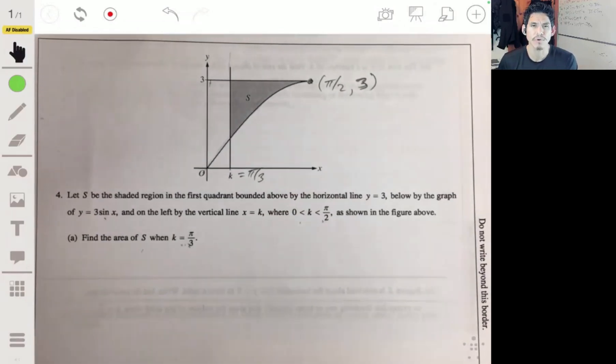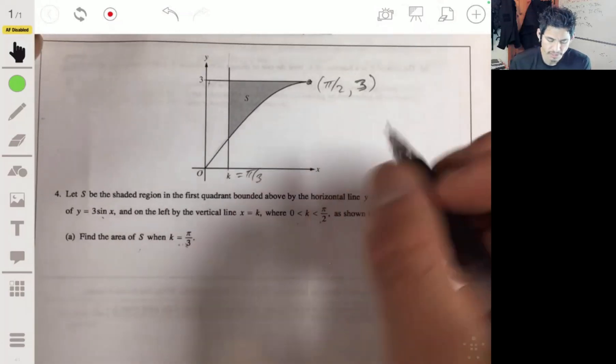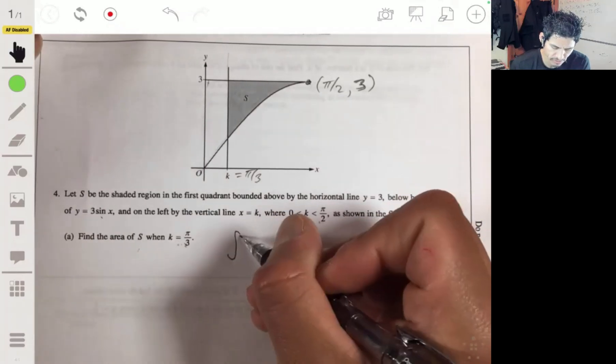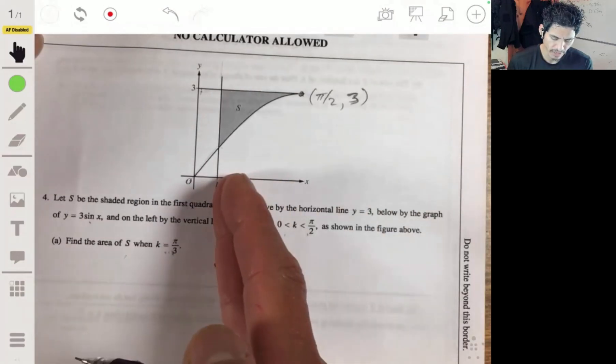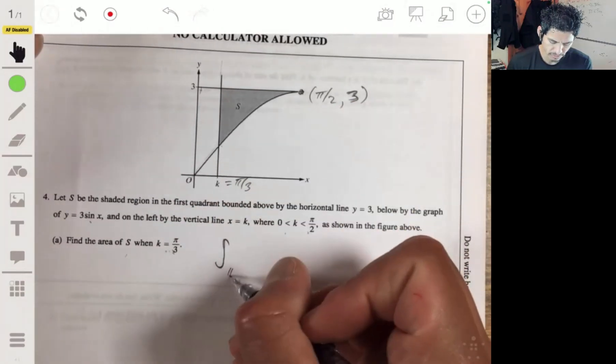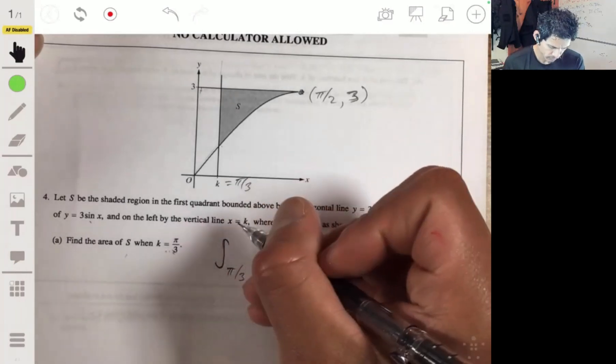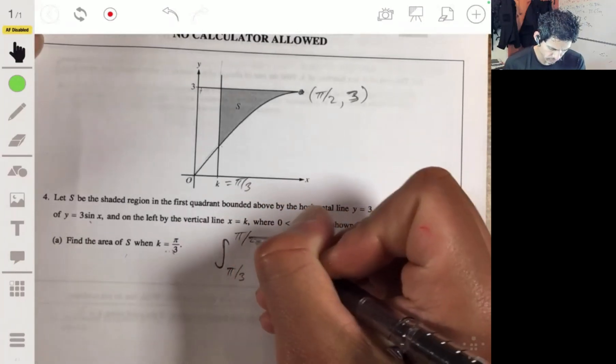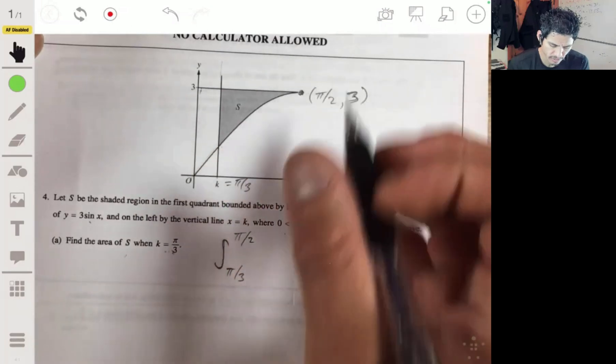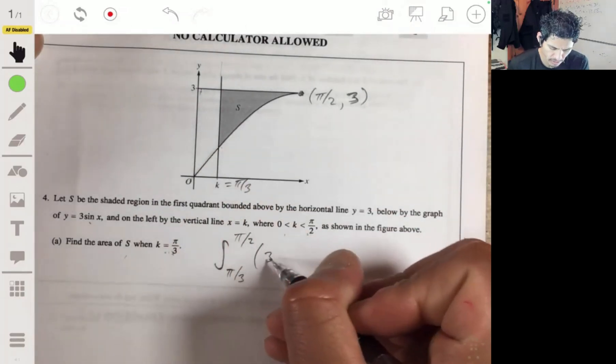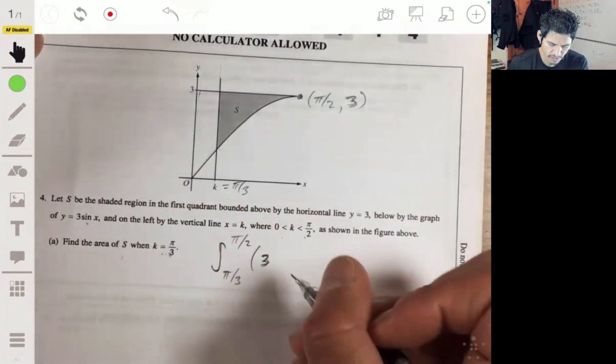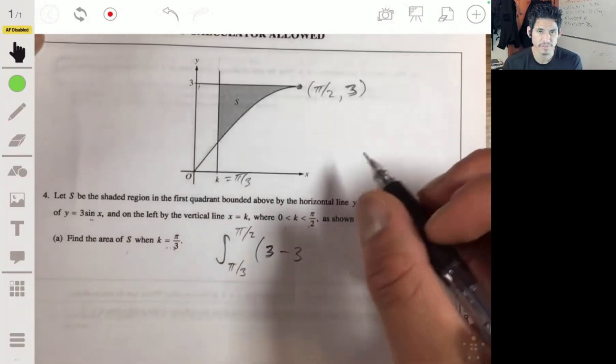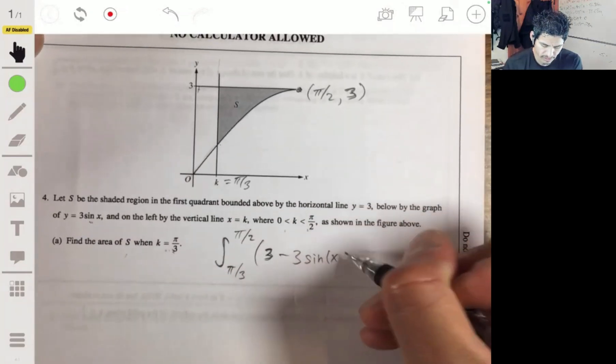All right, and now we just have thin rectangle. I really like this stuff. So we're just going to integrate from pi over 3 to pi over 2, and it's going to be this line, 3, minus the bottom area, which is going to be 3 times the sine of x, minus 3 sine of x.